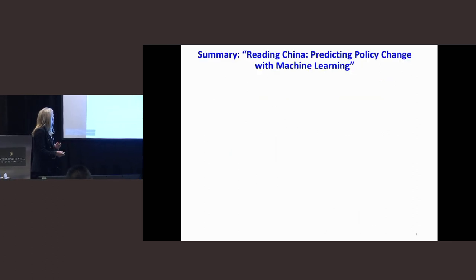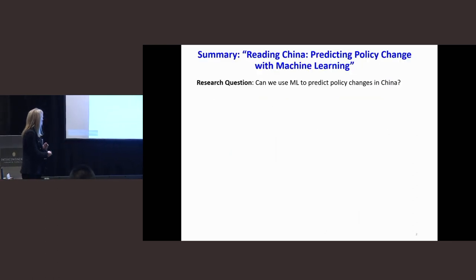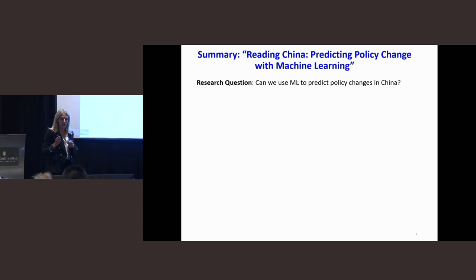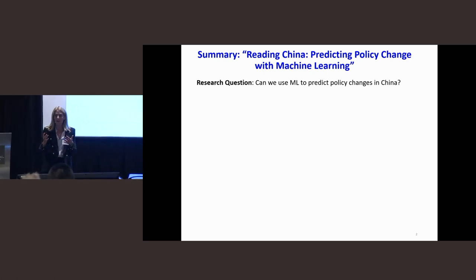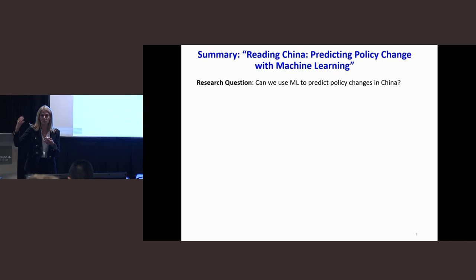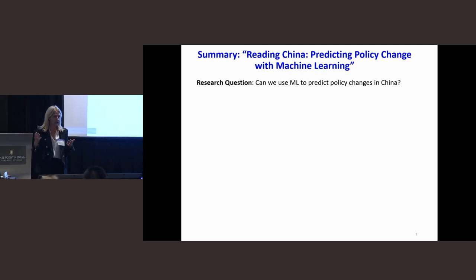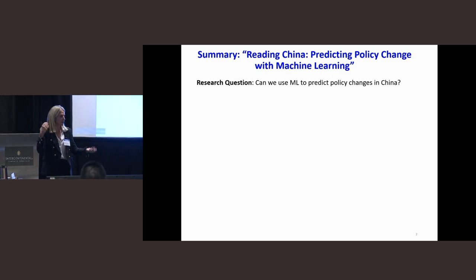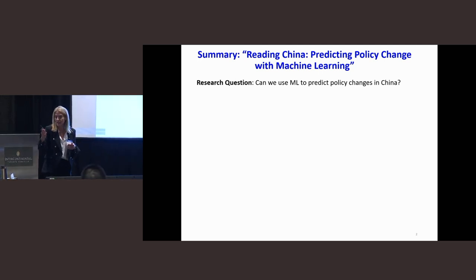So, reading China: predicting policy change with machine learning. The research question they come at is, can we predict policy changes in China? And if you think about that, the first way you would do that is say, can we predict what the policy is going to be now and compare that to what policy was, and we've identified a change? And the answer is no — that's really hard to do to try to predict what the policy may be.